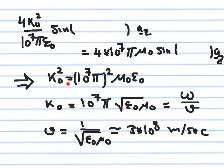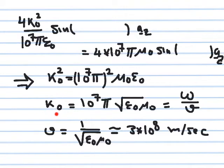ε_naught multiplied by μ_naught gives the product μ_naught ε_naught, so k_naught squared equals (10^7 π)^2 × μ_naught ε_naught. Taking the square root, k_naught equals 10^7 π × √(μ_naught ε_naught). This formula is very well known in high-frequency electromagnetics: for a uniform plane wave, the phase constant in the direction of propagation is related to the angular frequency ω.